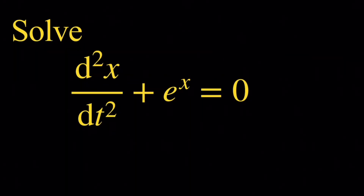Hello everyone and welcome. In this video, we're going to solve the following differential equation. We have the second derivative of x with respect to t plus e to the x equals 0. This is a second order differential equation where the unknown function is x and the independent variable is t.